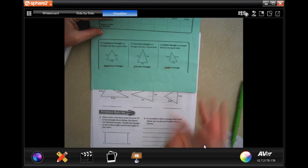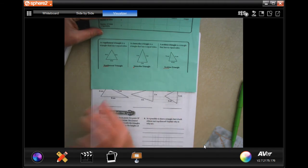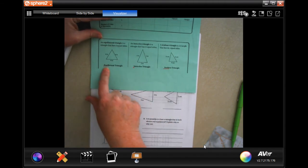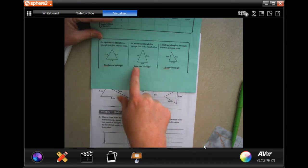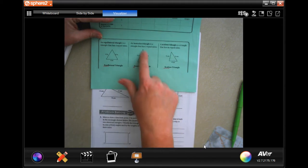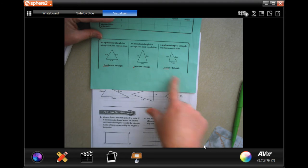So equilateral means all sides are equal. Isosceles triangle looks like an upside down or right side up ice cream cone. Isosceles, ice cream. That means that two of the sides are the same and one is different.